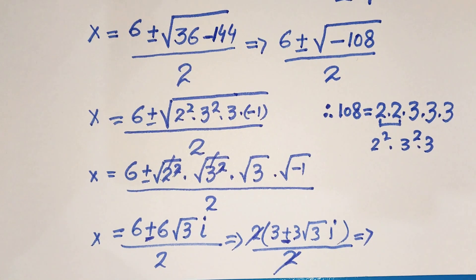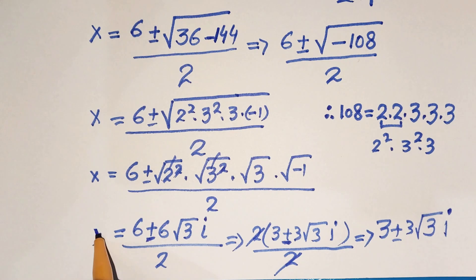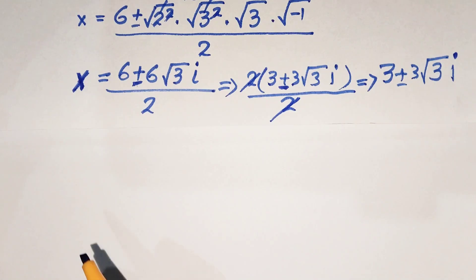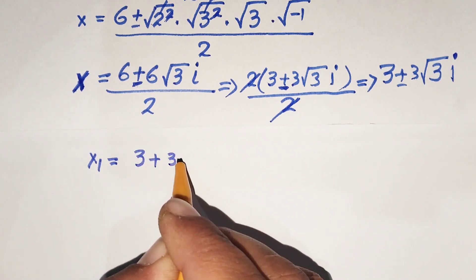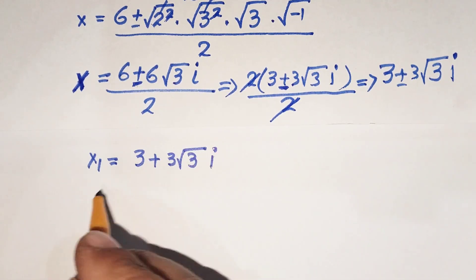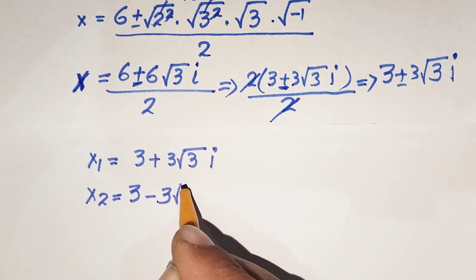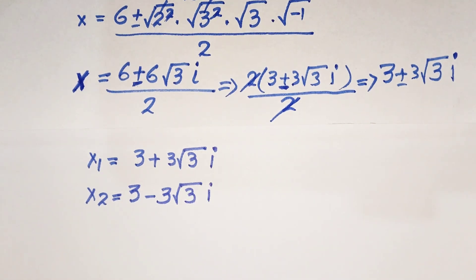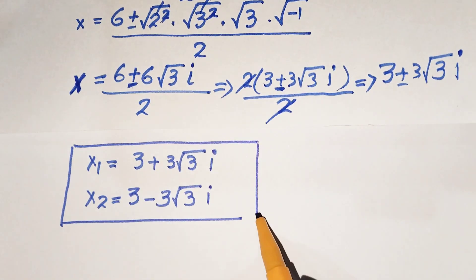Taking 2 as a common factor in the numerator — 6 plus or minus 6 square root of 3 i over 2 — and canceling the 2, we get x equals 3 plus or minus 3 square root of 3 i. So the two values of x are: x1 equals 3 plus 3 square root of 3 i, and x2 equals 3 minus 3 square root of 3 i.